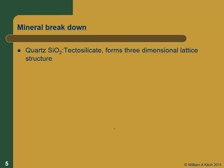Quartz is SiO2. It's a tetrasilicated form - a three-dimensional lattice structure. It's a very strong, three-dimensional structure. If you think of a space lattice in three dimensions, like those two-dimensional space lattices you see in roofs of sports centers - in three dimensions it's very strong, very hard to attack. It's chemically balanced as SiO2.